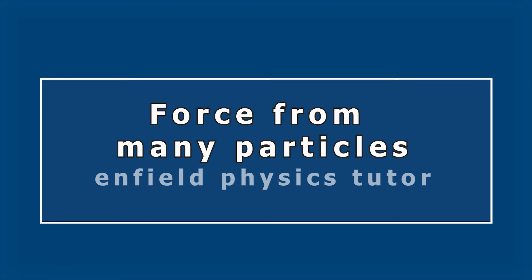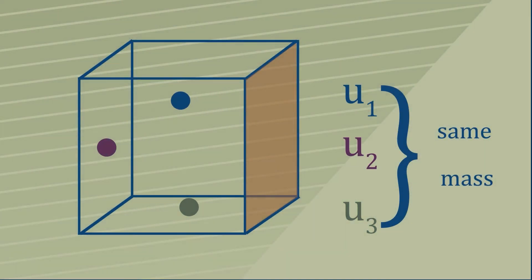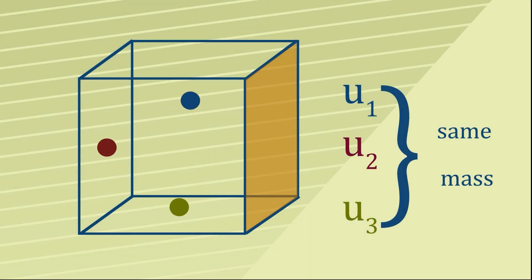It's actually fairly straightforward to work out what the total force would be from all these different particles all traveling along the x direction and colliding with the wall. You just add the force from each one.